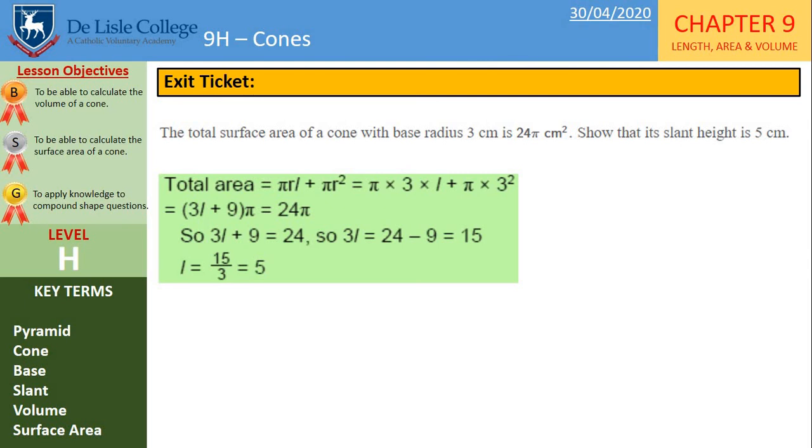Subtracting the 9 and then divide by 3. So we can use that 5 and substitute it in to get an answer of 24 pi. We have to use working to end with the answer of 5 cm.